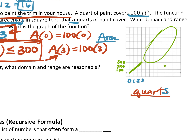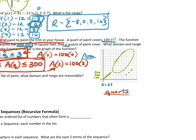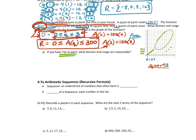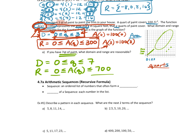Continuous means put the line in. Discrete means you just have these specific points. Like if I buy one ticket or two tickets or three tickets, you're not going to buy one and a half tickets to a concert — that would be discrete. But because you can use part of a can of paint, this is continuous. So if you have seven quarts of paint instead of three, your reasonable domain is between zero and seven, and your reasonable range is between zero and 700.